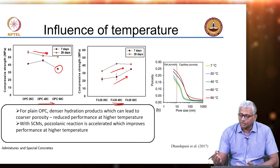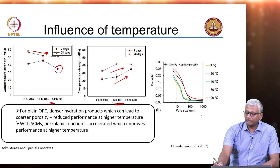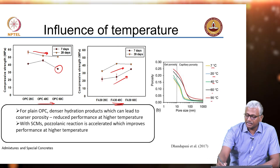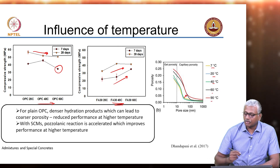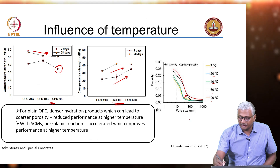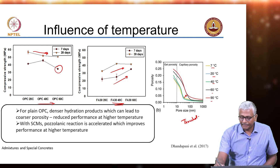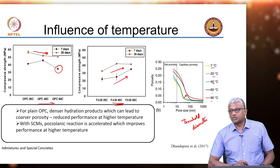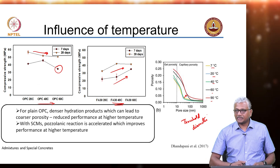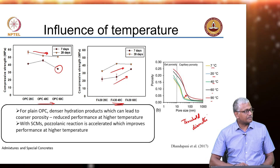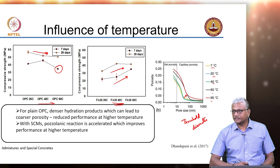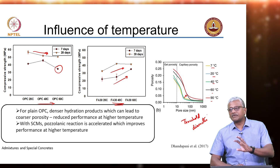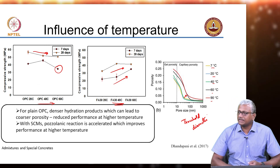This can also be shown in terms of mercury intrusion porosimetry studies at different temperatures — 7, 20, 40, 60, and 90 degrees Celsius. What has clearly happened is as you go from 40 to 60 degrees, there is a shift in the threshold diameter of pores to the right, indicating that the system has become much coarser compared to a system cured at normal temperature. So there is always a price to pay when you want to accelerate the strength development of your concrete.